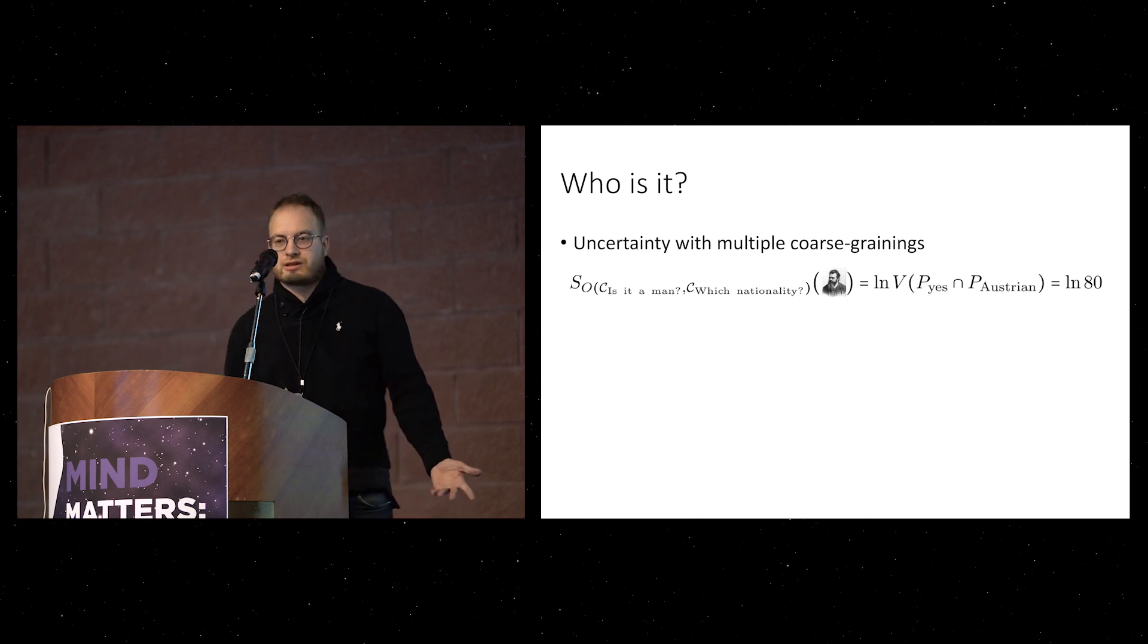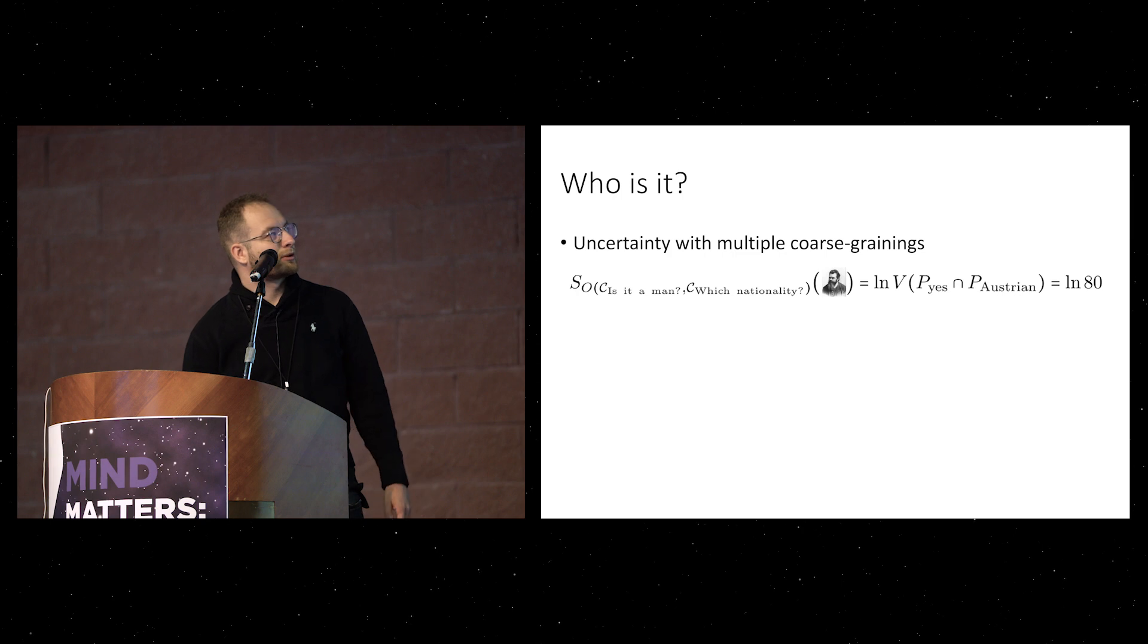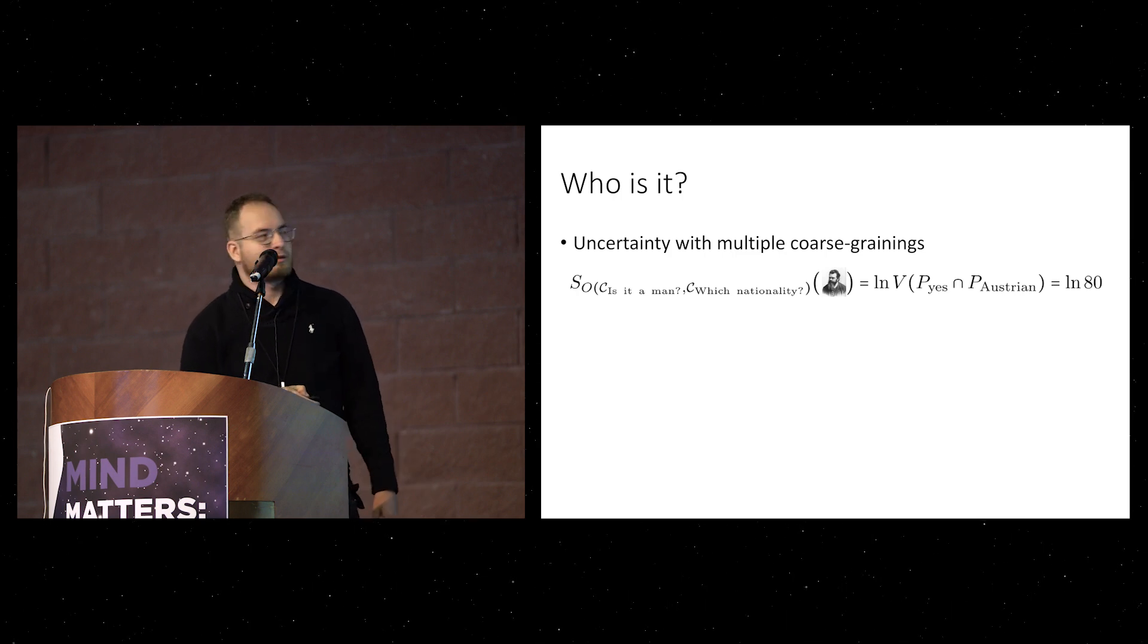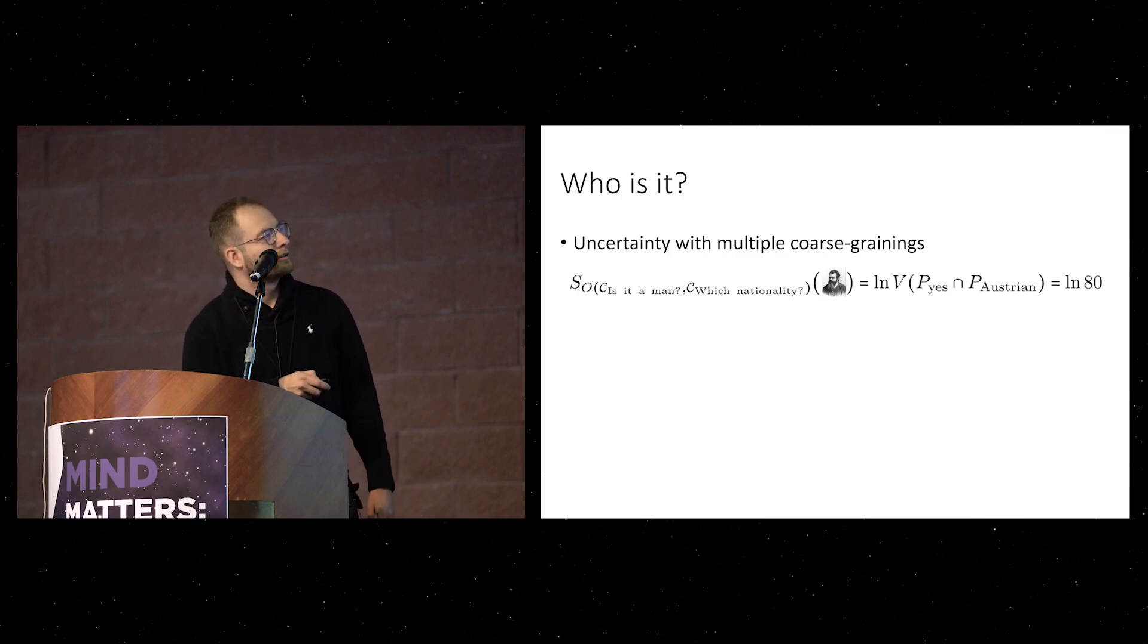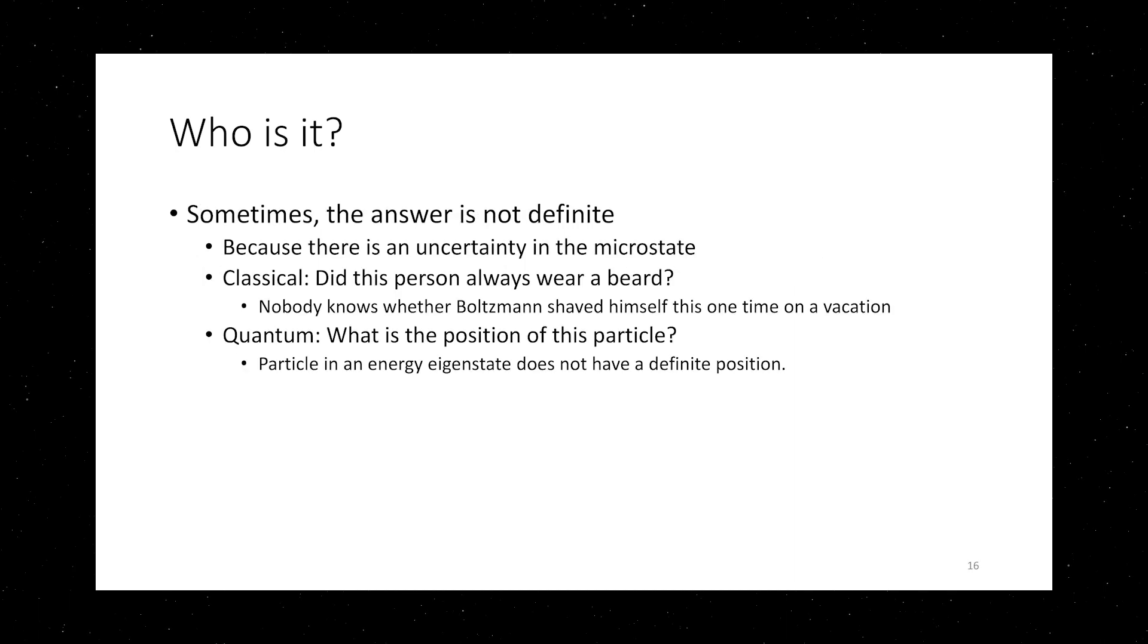Now you can introduce the similar kind of definition with multiple questions, or let's say multiple coarse grainings. So you ask me, is it a man? And which nationwide is it? Then logarithm of the volume of the overlap of these macrostates is logarithm of 80. And this motivates us to introduce the general definition. Oh no, not yet.